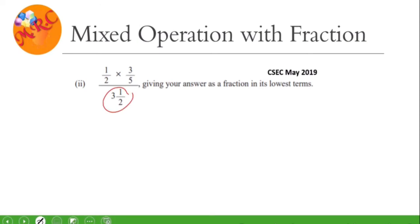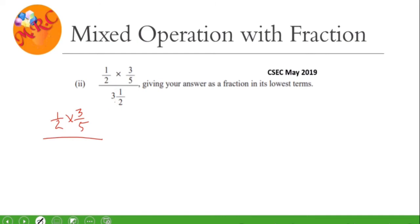At the bottom there is the denominator, and we're seeing a mixed fraction which is three and a half. We're going to change that into an improper fraction. We multiply the denominator with the whole number and then add that result to the numerator. So we write the numerator as we have it — three-fifths — and divide. Three times two is six, plus one gives us seven. So we write seven divided by two.